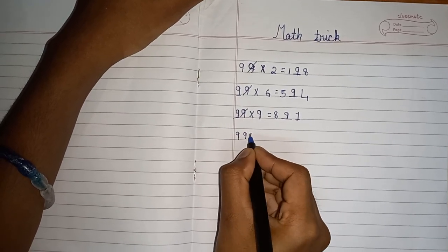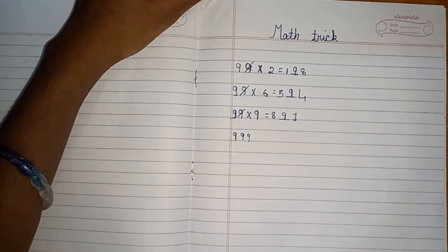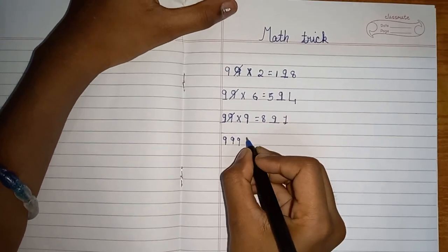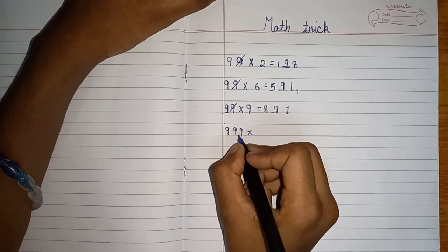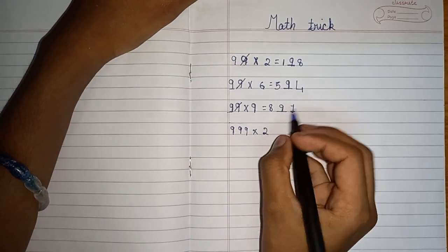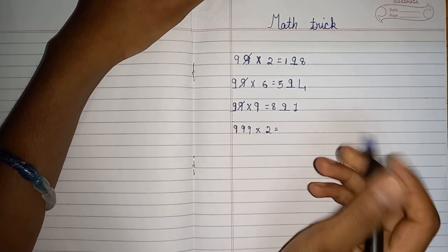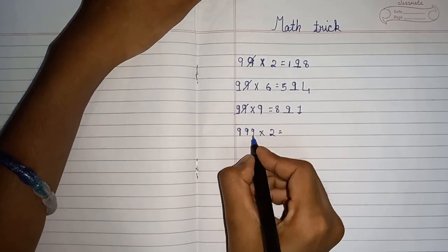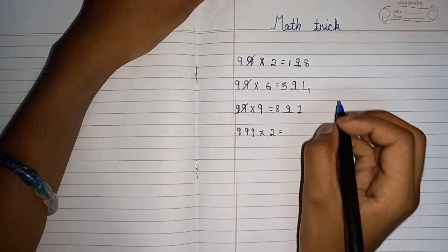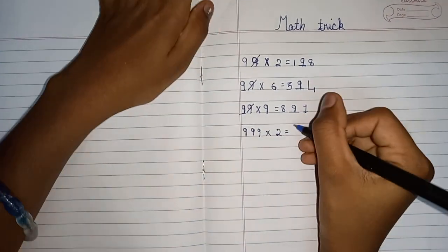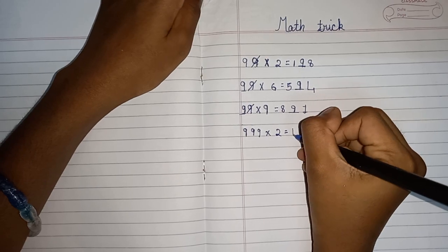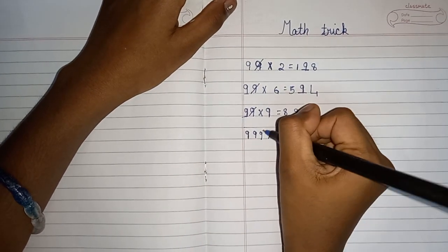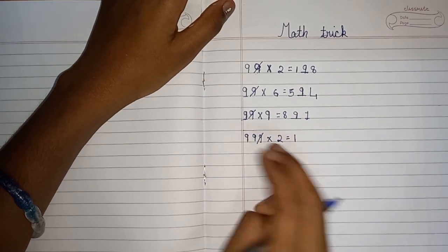Now we'll be using 999 — three nines. We follow the same rule. For 999 multiplied by 2, we still do 2 multiplied by 9 which is 18. But this time there are two nines remaining, so we're canceling two digits.